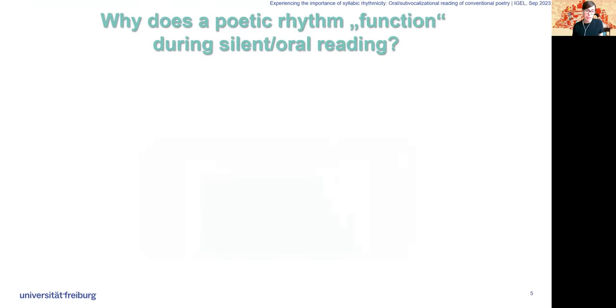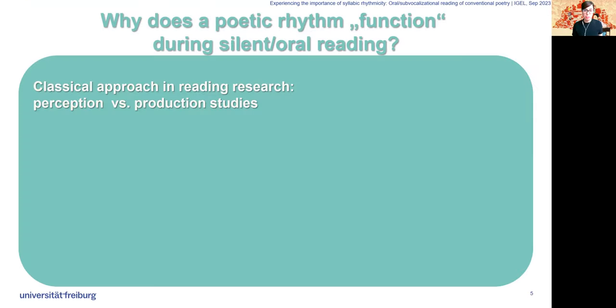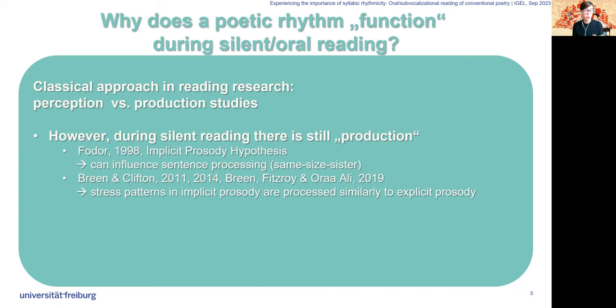In classical reading research, the typical approach is to divide into perception versus production studies. However, during silent reading, we still have something like production. Here, perception and to a certain degree production interact gradually, just without the physical output, which is the crux.